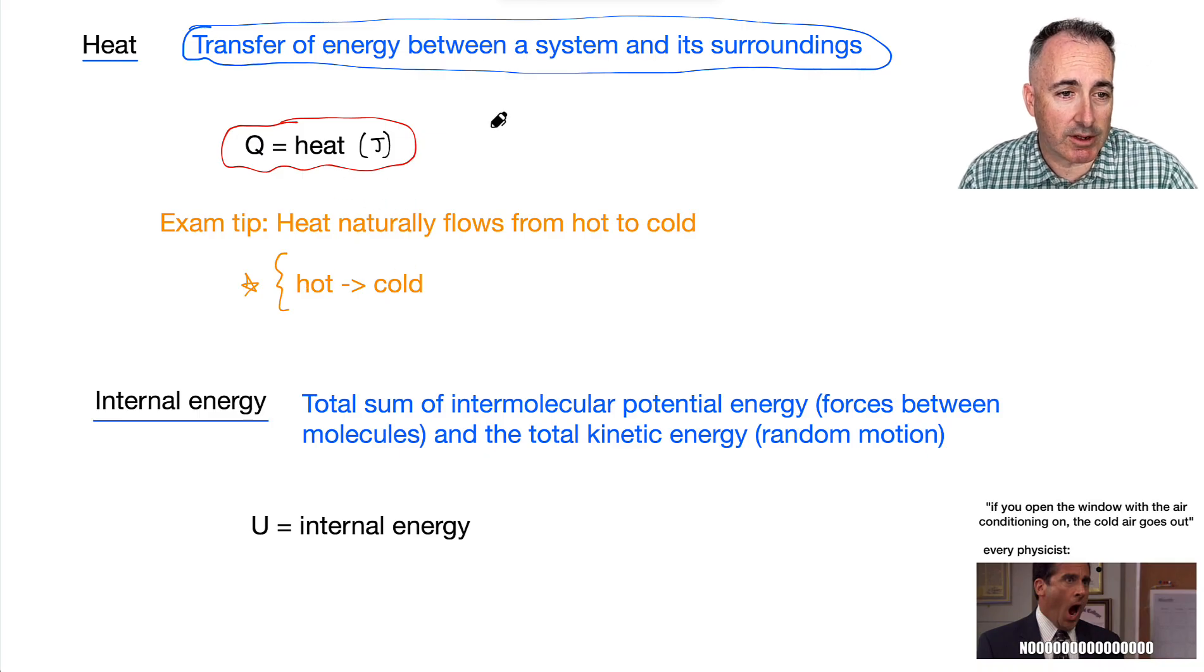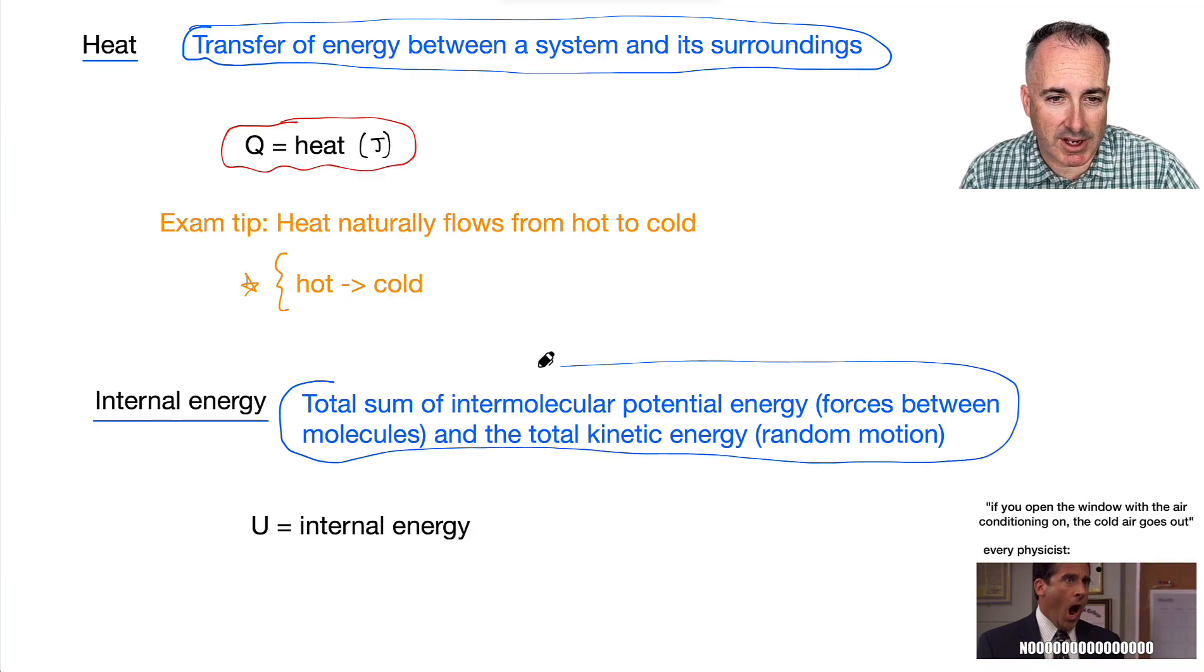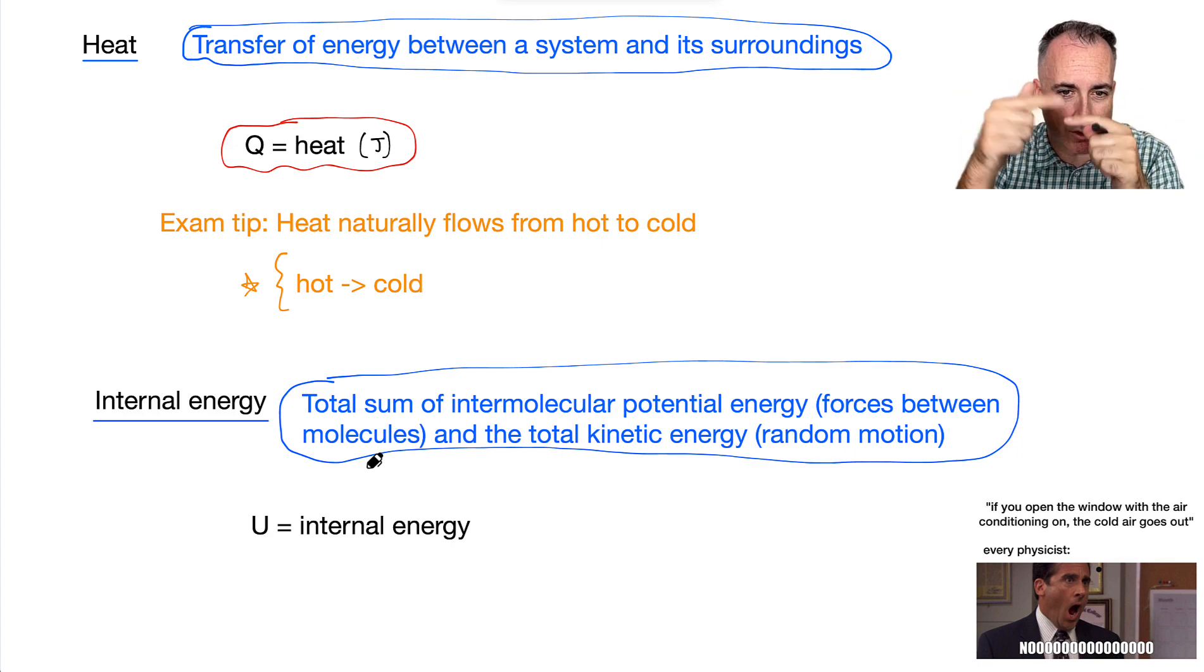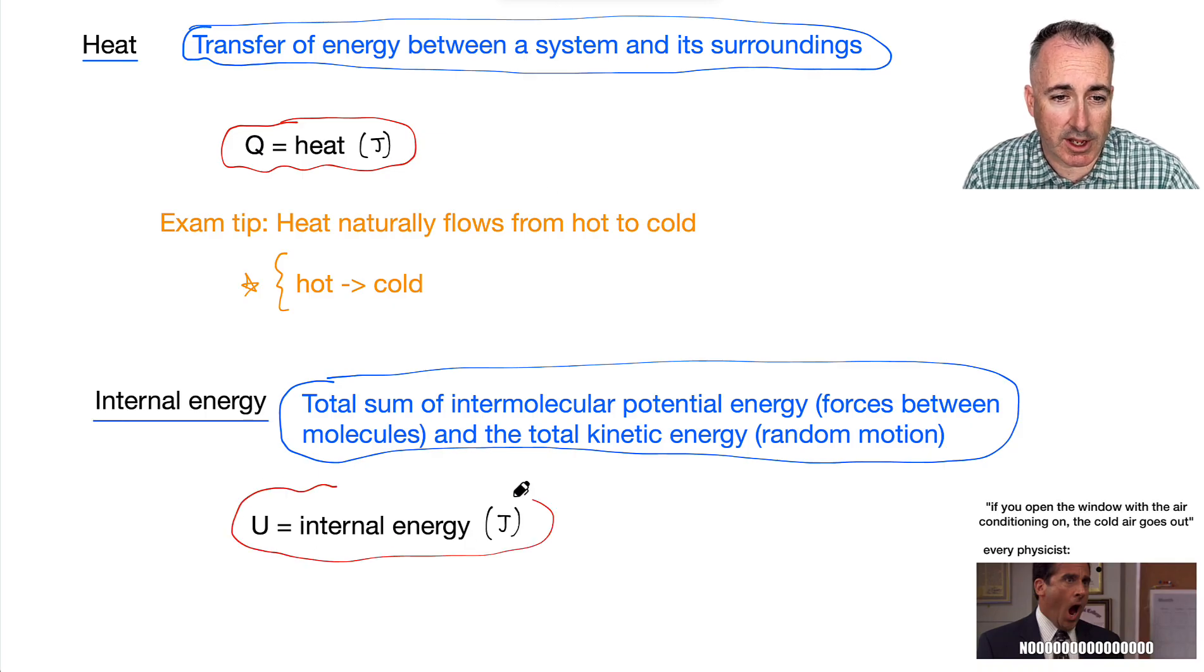Now, we've got this thing called internal energy. And that's going to be the total sum of intermolecular potential energy. What does that mean? That's the forces between those molecules. In the animations I showed you, that's the force between those molecules that are moving around. But it's the sum of that and the kinetic energy. And that's due to the random motion. So, this U is the variable we use to denote that. And we still measure it in joules. So, that's still important here. U is the internal energy.